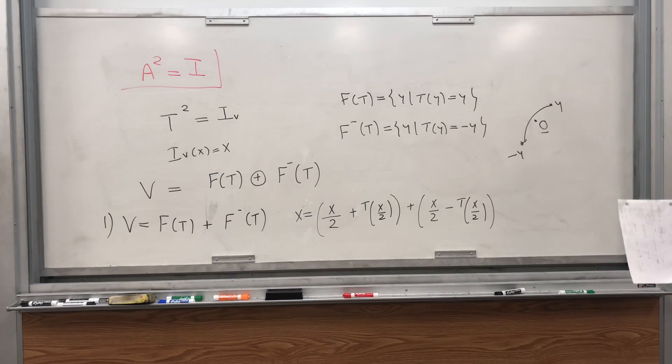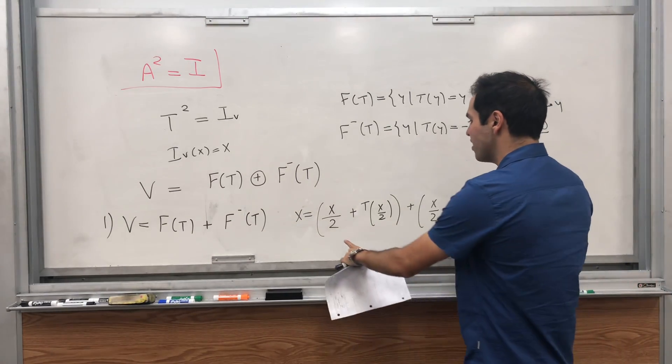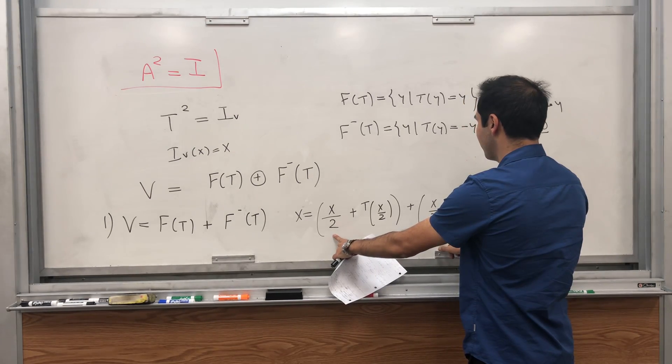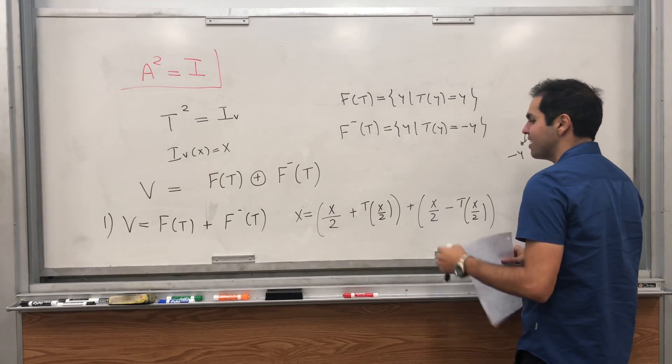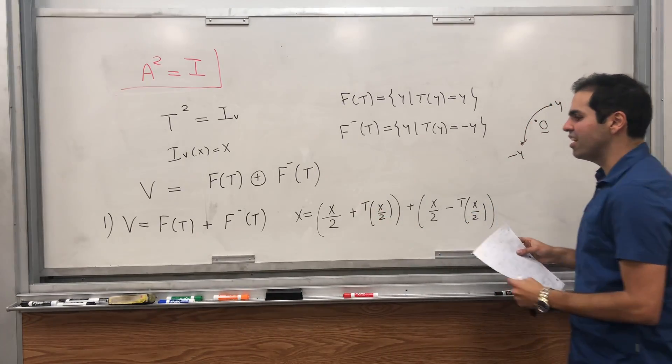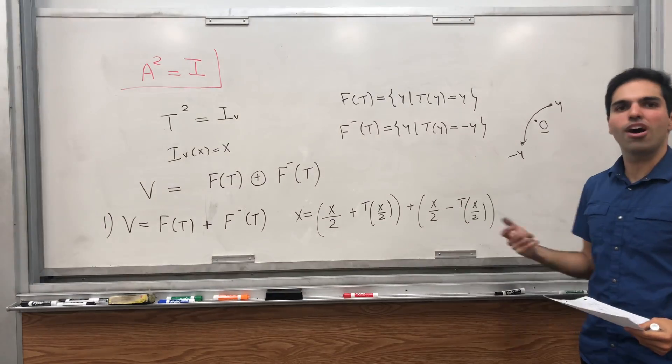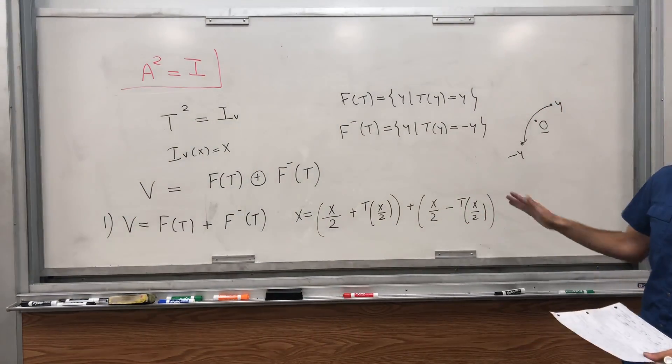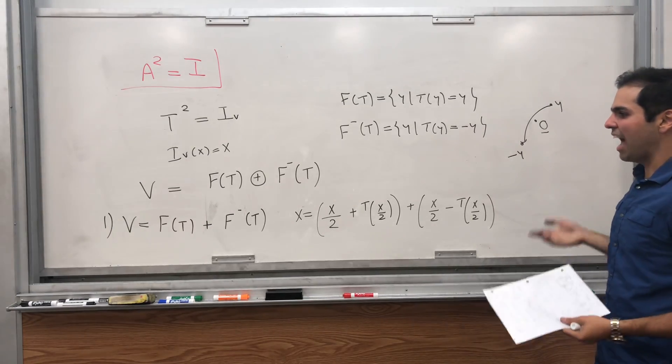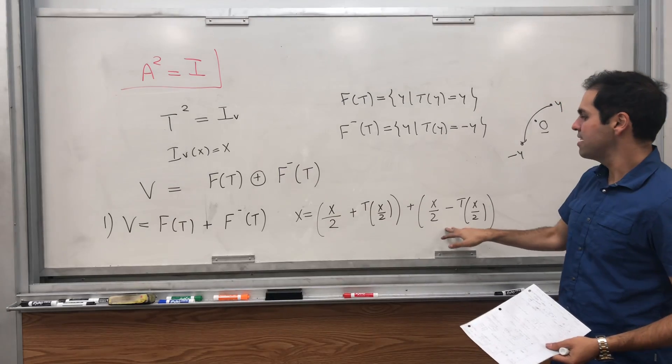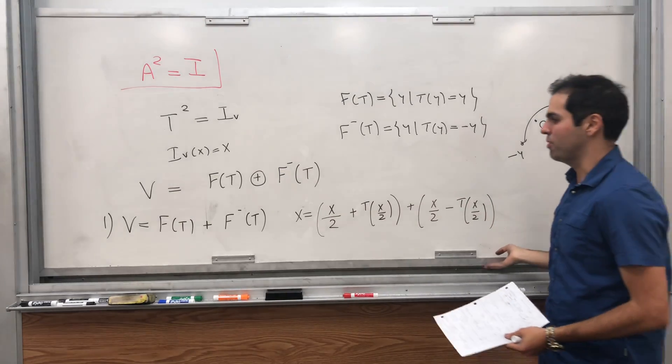Okay, and again, what's the motivation? I want the sum of those to be x, that's why we have x over 2 and x over 2. And technically I wanted T(x) and minus T(x), but if you do that you're off by a factor of one half, that's why you just scale it by one half and you get this. And I'm claiming that this is in the fixed point space and this is in the anti-fixed point space.